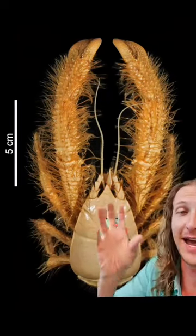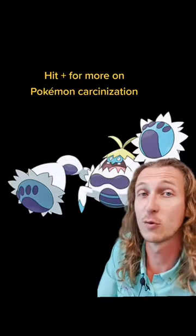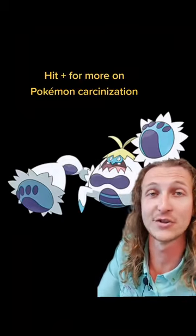This infraorder includes other things like hermit crabs, and basically all of these things that went through carcinization from a non-crab-like thing to a more crab-like thing that we see behind me. And I think a similar thing happened with Crabominable, turning it into a crab.